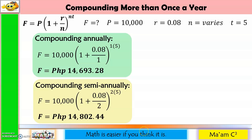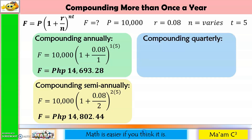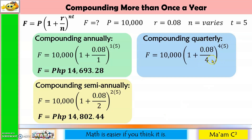Now let us compute compounding quarterly. Substituting the values, N is 4 because there are 4 quarters in a year, so the exponent NT also uses N equal to 4. This gives us 14,859 pesos and 47 centavos.